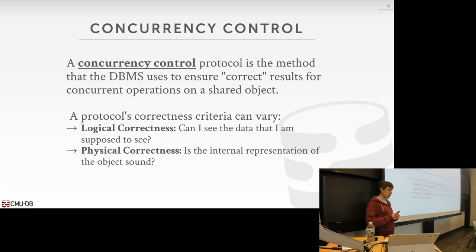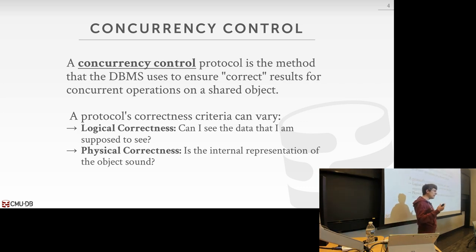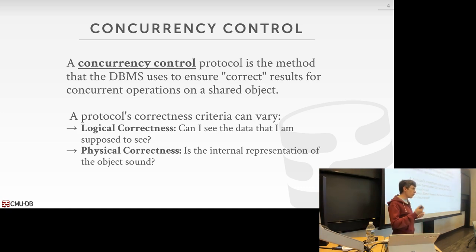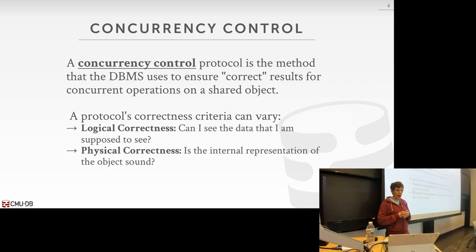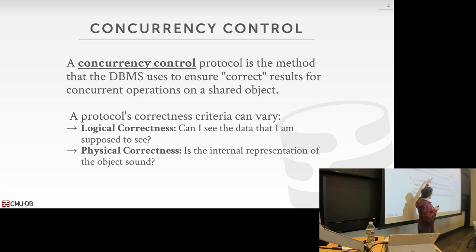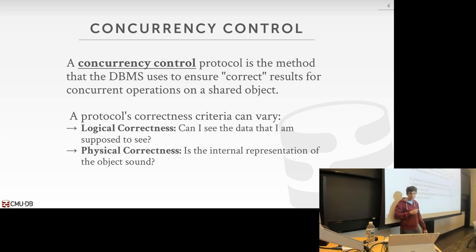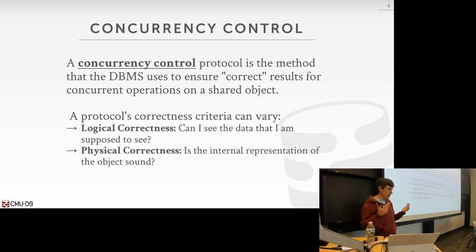The way we'll protect our data structures is through a concurrency control protocol — a method by which the database system guarantees correctness of the data structure by enforcing all threads to access it using a certain protocol. I'm putting 'correct' in quotes because it can mean different things. The shared objects could be a tuple, an index, or the page table in the buffer pool. The two types of correctness we care about are logical correctness and physical correctness.